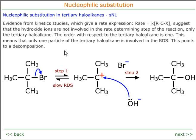With tertiary haloalkanes, the rate expression is: rate = k[tertiary haloalkane]. This suggests no nucleophile is involved in the slowest step. The only way this is possible is if the haloalkane itself is dissociating — the leaving of the halide ion is the slowest step. This gives a species with a positive charge, a carbonium ion or carbocation. The second step is then attack by the nucleophile (OH⁻), creating the tertiary alcohol.